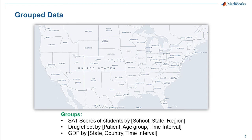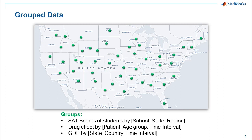An idea central to this topic is the concept of grouped data. For example, consider analyzing SAT scores of students across the country. This data can be grouped by schools the students attend, schools grouped by states, states by region, and so on. Students in a particular school or state are affected by school- or state-specific factors such as quality of education or education laws. Grouping information is important to make meaningful inferences and commonly occurs in experimental and observational studies.